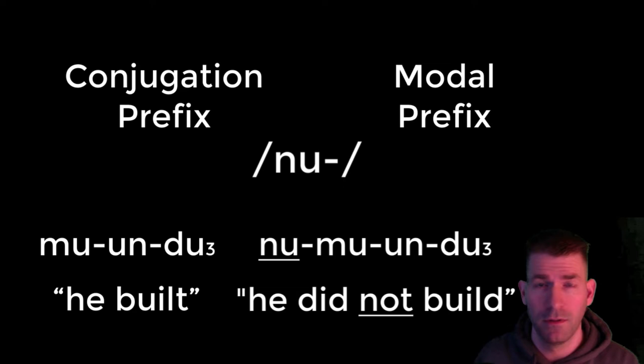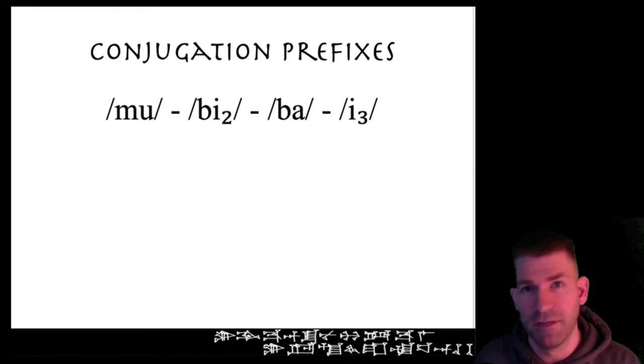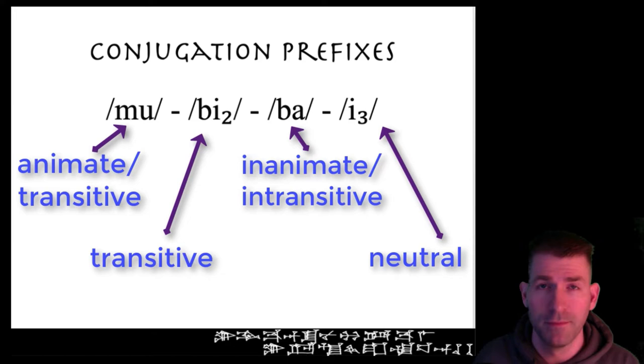We will discuss the common conjugation and modal prefixes below. There are four common conjugation prefixes: mu, b₂, bah, and e₃. While it is not essential that you remember the differences between these four prefixes, knowing what kinds of verbs usually appear with them may aid you in translation. Some prefixes normally appear, for example, with transitive verbs, and some with intransitive or passive verbs.